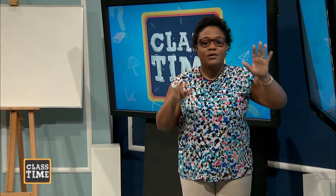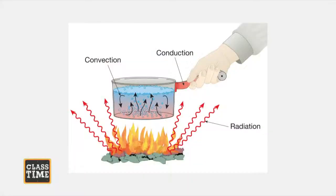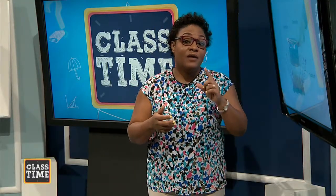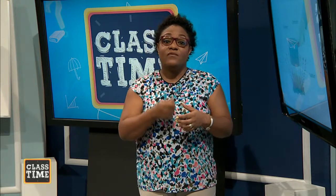To remember the difference: convection — liquid, air, circular motion. Conduction — solid to solid. Radiation — direct, straight, no medium, radiant waves and microwaves, direct contact to a heat source. For example, when you're camping with a bonfire and roasting marshmallows, that is radiant heat — you use a wooden stick as a poor conductor or insulator. If the heat from the fire transferred through a metal stick to your hand, that would be conduction.